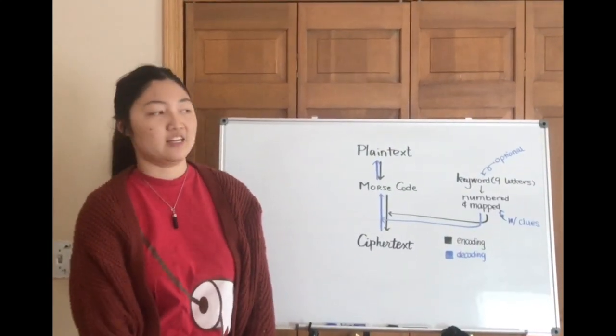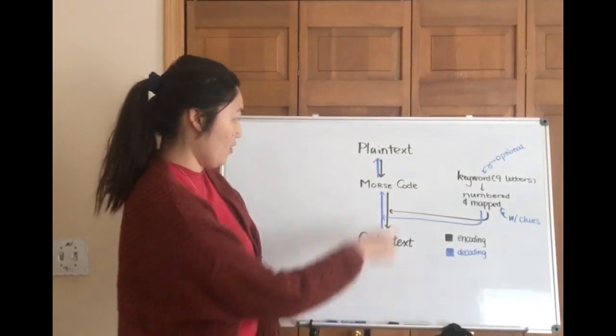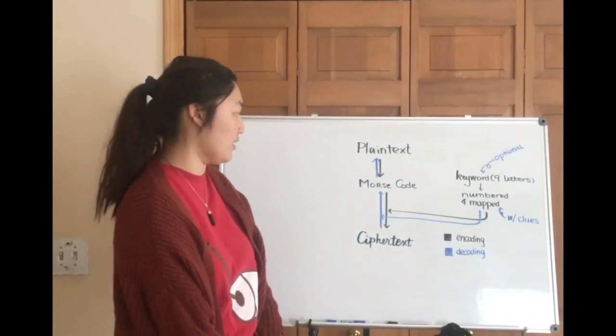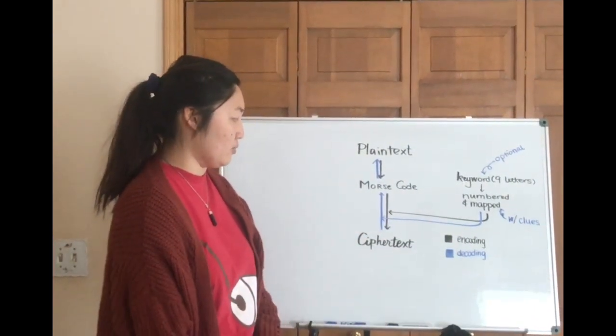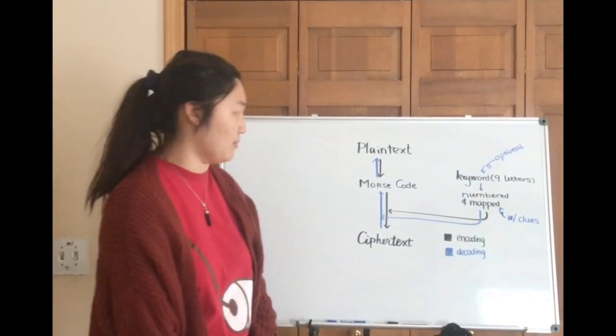So here's a fairly simple diagram of how the Morbid Cipher works. Note that all the arrows are showing the process of either encoding and decoding, blue denoting the decoding process and black denoting the encoding process.